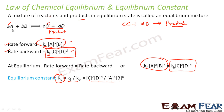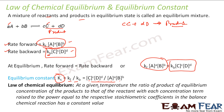So for any reaction aA + bB ⇌ cC + dD, the equilibrium constant Kc equals [C]^c × [D]^d divided by [A]^a × [B]^b. This defines the Law of Chemical Equilibrium, which states that at a given temperature, the ratio of the product of equilibrium concentrations of products to that of reactants, each raised to the power of its stoichiometric coefficient in the balanced equation, is a constant value.